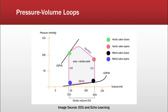Compliance is used to describe the relaxation abilities of the left ventricle and is fundamental in diastolic function. As I have talked about before, patients who suffer from congestive heart failure generally have a lower compliance due to the thickening of the ventricle walls. This leads to a higher end diastolic volume and a smaller stroke volume.